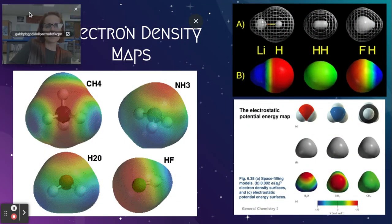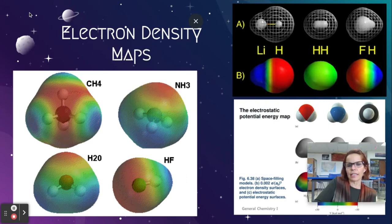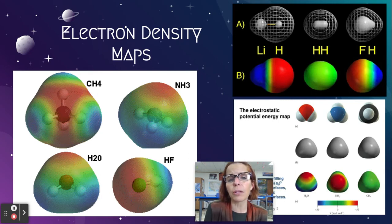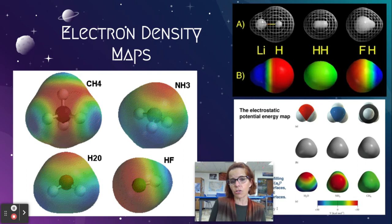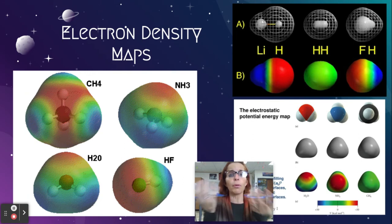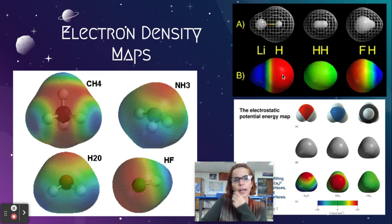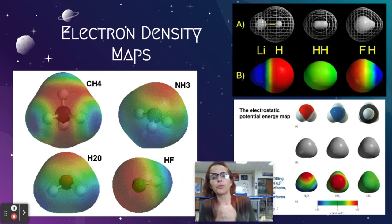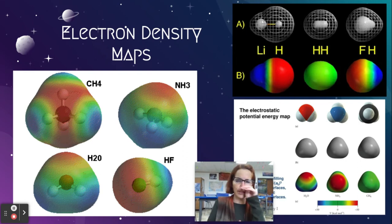This slide shows electron density maps and what some molecules look like. The red is where it's especially negative — where it has a partial negative charge. The blue is where it has a partial positive charge. You can see that these two hydrogens — H₂ — are nonpolar, as it doesn't have a polar side. Whereas lithium and hydrogen is strongly polar: the hydrogen is much more electronegative than the lithium, so the electrons are being pulled toward the hydrogen more.